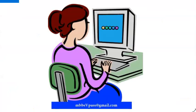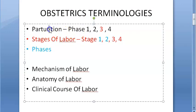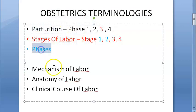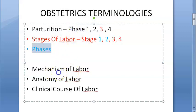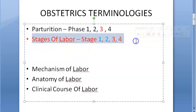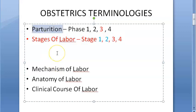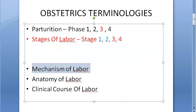So you've understood what parturition is, the stages of labor at a high level, and that the word 'phase' comes both in parturition and under each stage of labor. What do you mean by mechanism of labor?